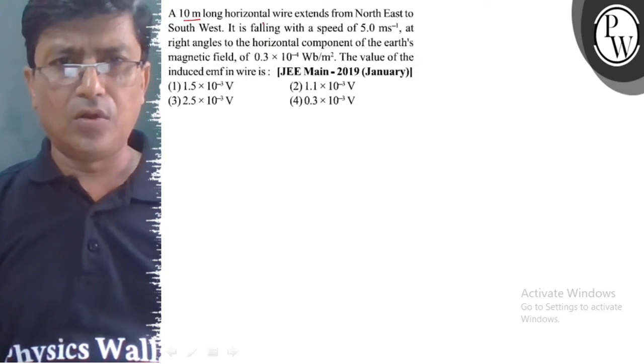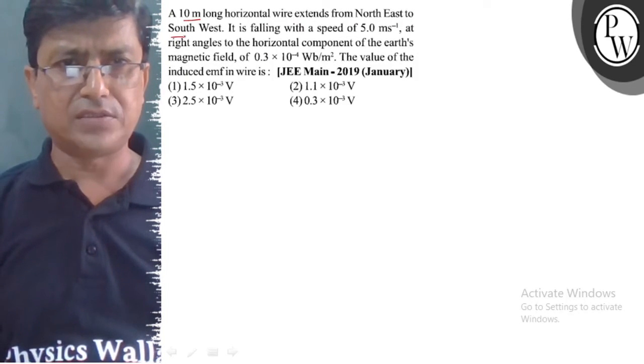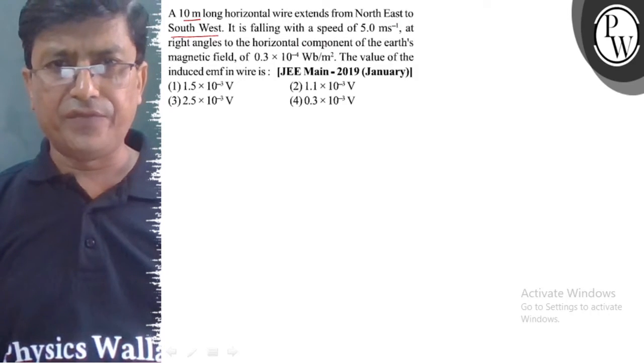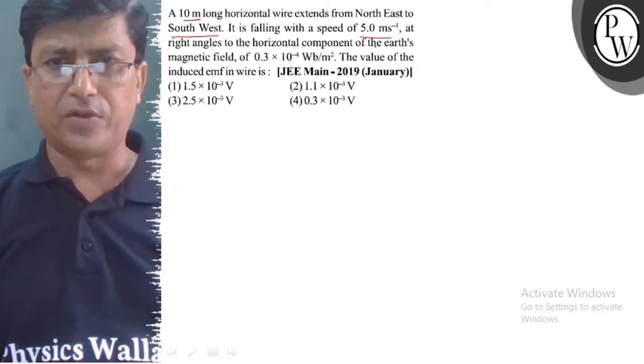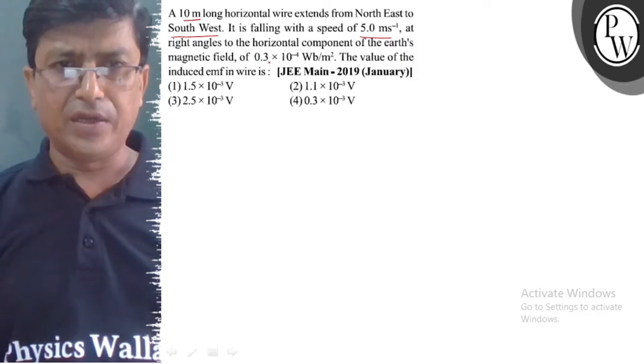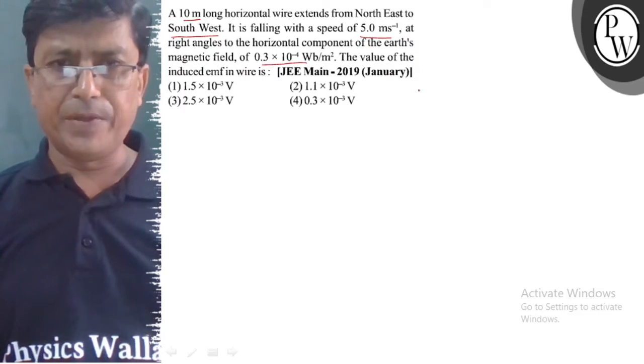A 10 meter long horizontal wire extends from North East to South West. It is falling with a speed of 5.0 m/s at right angles to the horizontal component of the earth's magnetic field, 0.3 × 10^-4 weber per meter square.